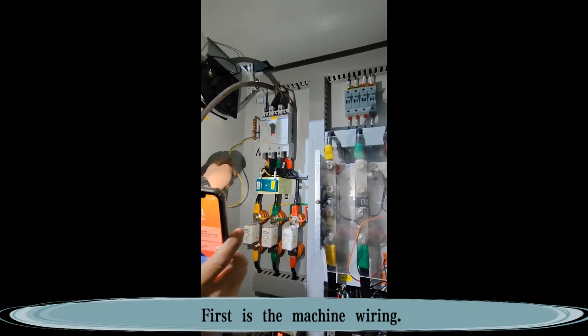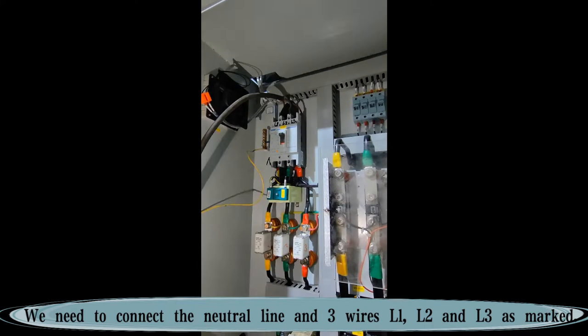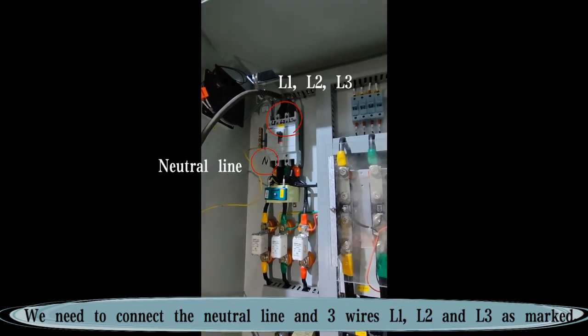First is the machine wiring. We need to connect the neutral line and three wires L1, L2, and L3 as marked.